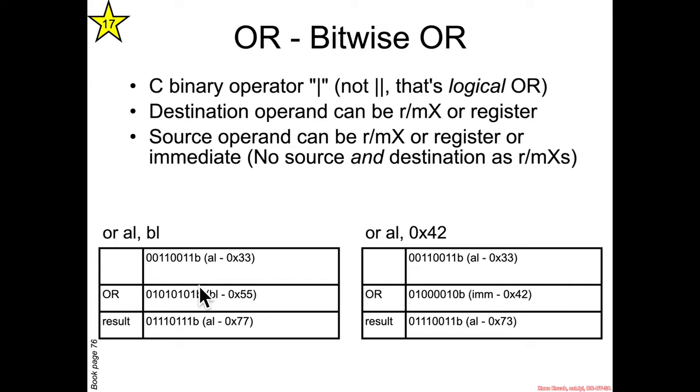OR is going to be a bitwise OR so it just does 1 OR 1 that's 1, 1 OR 0 that's 1, 0 OR 1 that's 1. Basically as long as you know the basic Boolean operations then you just go down the line and do it bitwise on the two operands.